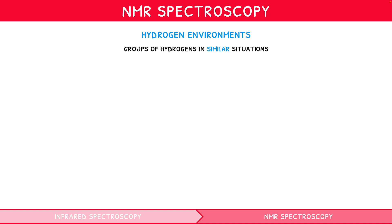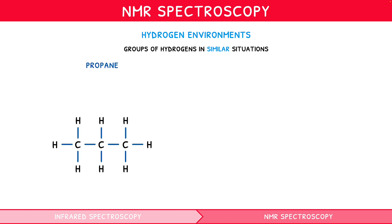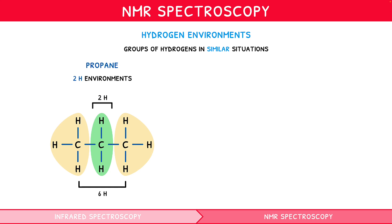Consider the displayed formula of propane. Dividing the hydrogens into groups, we can say it consists of three hydrogen groups: CH₃, CH₂, and CH₃. However, since both CH₃ groups are adjacent to a CH₂ group, they are identical. Thus, propane contains two hydrogen environments, containing six and two hydrogens each.